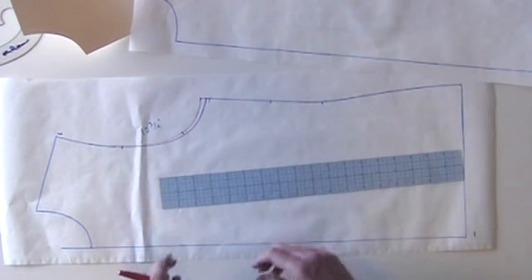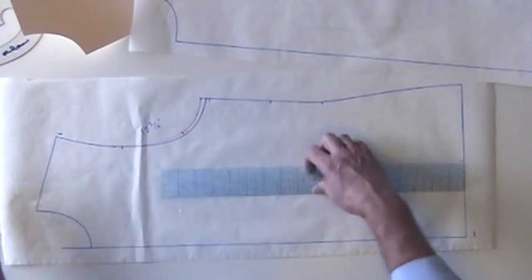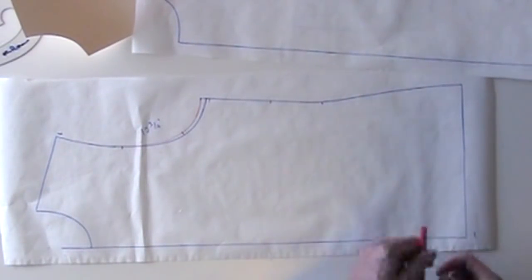In this case, I'm doing a little bit of both. Now I'm going to add seam allowances to these, cut them out and sew them up.